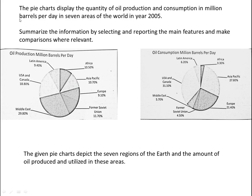Let's begin with the introduction. We read the information and then paraphrase it. The pie chart displays the quantity of oil production and consumption in million barrels per day in seven areas of the world in year 2005. So to paraphrase it: 'The given pie chart depicts the seven regions of the earth and the amount of oil produced and utilized in these areas.' We have used 'seven regions of earth' and 'amount of oil produced and utilized' instead of 'oil production and consumption.' We just use synonyms to paraphrase.